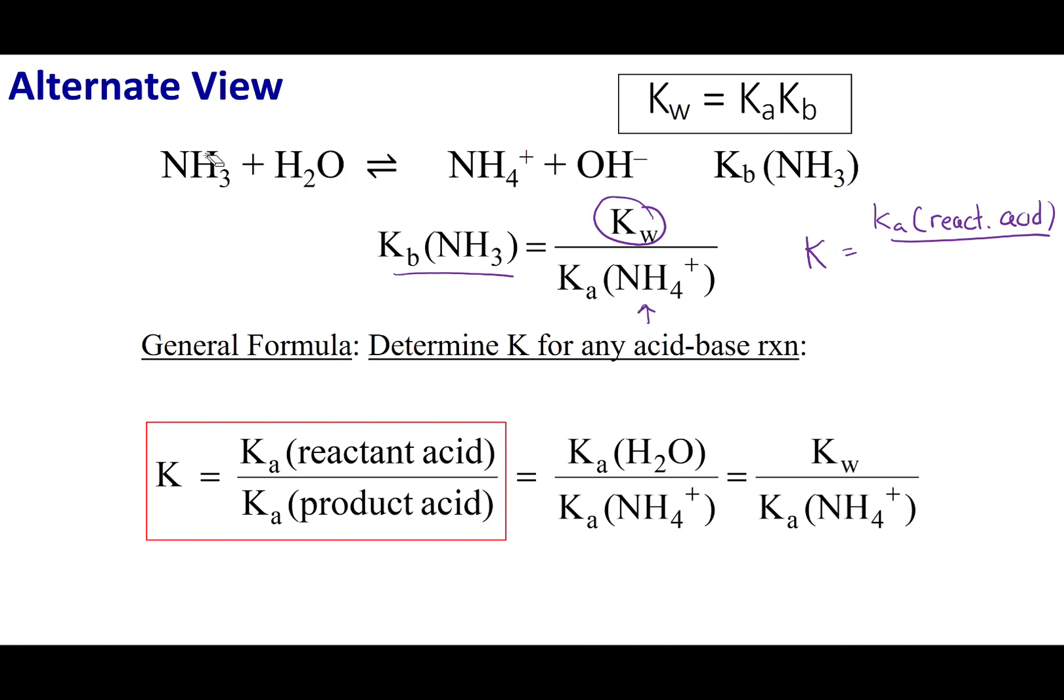Let's take a look at what's on the bottom. We have the Ka of NH4+. What you'll see is that NH4+ is on the product side. On the product side, it's acting like an acid if I do the reverse reaction. I donate a proton to regenerate my water. What I can say is I have the Ka of the product acid, or in other words, on the product side, what is acting like an acid. This equation is the more general form of this relationship. If you are given an acid-base reaction, you can find the equilibrium constant for that reaction so long as you take the Ka of the reactant, divide it by the Ka of the product. Note this is one of the few equations where reactants is above products.